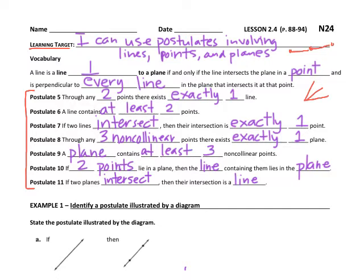In the vocabulary section, a line is perpendicular — remember this symbol means perpendicular — to a plane if and only if the line intersects the plane in a point and is perpendicular to every line in that plane that intersects at that point. You need to understand each one of these postulates so you can apply this information to the different diagrams you may see.